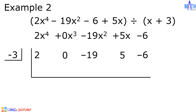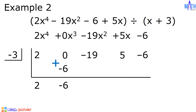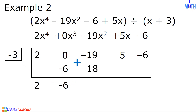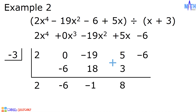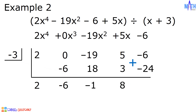Let us divide. Bring down the first coefficient and multiply by negative 3. Negative 3 times 2 is equal to negative 6. 0 plus negative 6 is equal to negative 6. Negative 3 times negative 6 is equal to 18. Negative 19 plus 18 is equal to negative 1. Negative 3 times negative 1 is equal to 3. 5 plus 3 is equal to 8. Negative 3 times 8 is equal to negative 24. Negative 6 plus negative 24 is equal to negative 30. Negative 30 is the remainder.